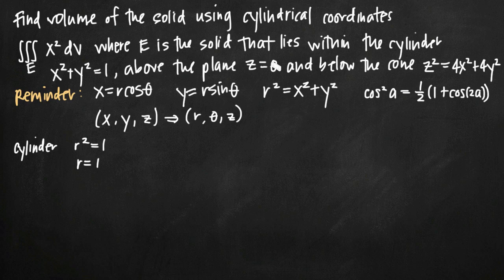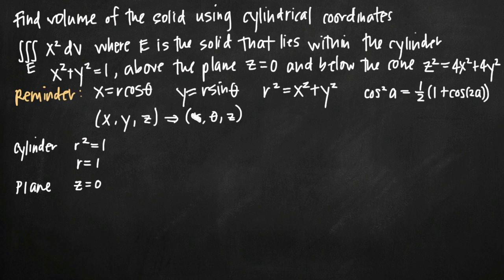What about the plane z equals 0? We already said that the coordinate z doesn't change across Cartesian and cylindrical coordinate systems — it stays the same. So the equation of our plane is still z equals 0.